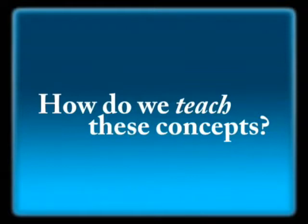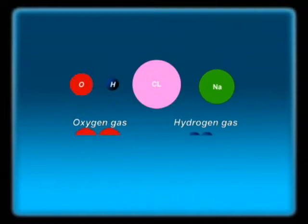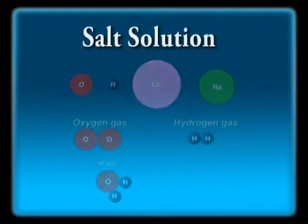Let's look at what we can do so that children actually understand these concepts well. As a teacher, we can use colored balls of different sizes to represent different atoms — red for oxygen, blue for hydrogen, pink for chlorine, and green for sodium. Through this, we can show oxygen gas — when two atoms of oxygen combine you have oxygen gas. Similarly, hydrogen gas. Water forms when two atoms of hydrogen combine with one atom of oxygen. Salt comes from sodium and chlorine, and you can have a mixture — a solution of common salt in water.